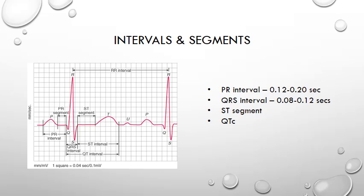Intervals and segments. Look at the measurements for each wave and their relevant interval, then look for any ST elevation and/or depression. Your PR interval should be between 0.12 and 0.20 seconds — that's 3 to 5 small squares on standard printed ECG paper. Your QRS interval should be between 0.08 and 0.12 seconds — that's 2 to 3 small squares. Then your ST segment: is it isoelectric, raised, or depressed? Then look at the QTc. The C stands for corrected. QTc is prolonged if more than 440 milliseconds in men or more than 460 milliseconds in women. QTc is abnormally short if less than 350 milliseconds. Steve did cover some of this information on his numbers video blog.